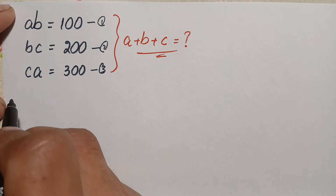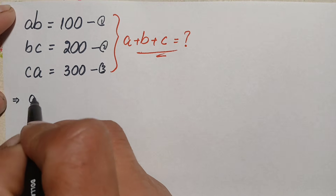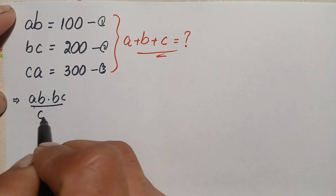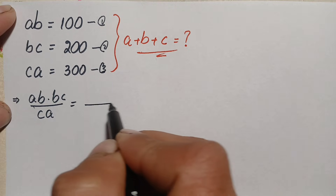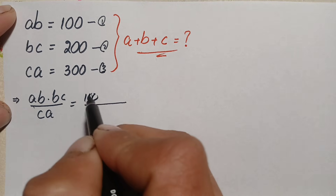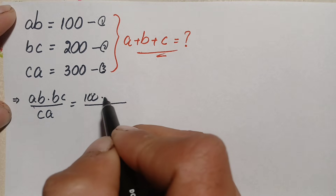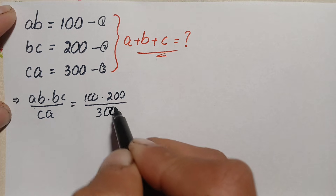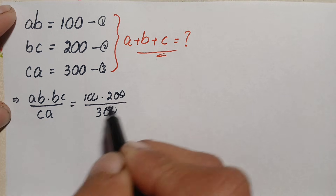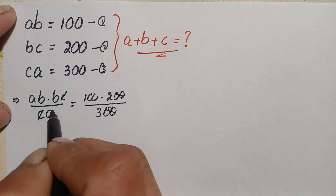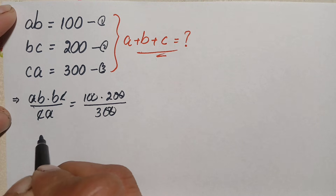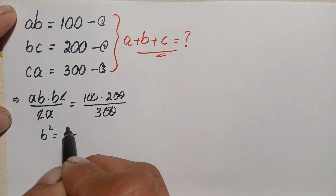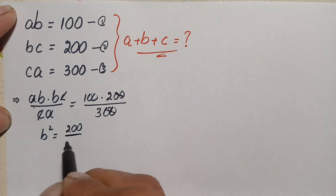Multiplying equation one and two gives a·b times b·c, divided by equation three which is c·a. On the right-hand side: 100 times 200 divided by 300. We cancel the common zeros, cancel c with c and a with a, leaving b times b, which is b squared, equal to 200 divided by 3.